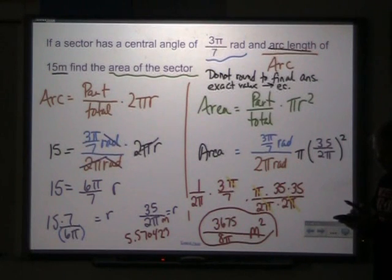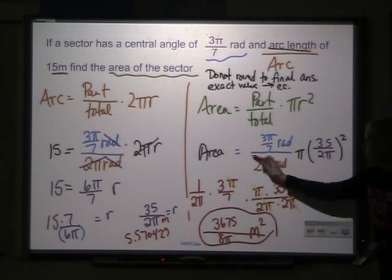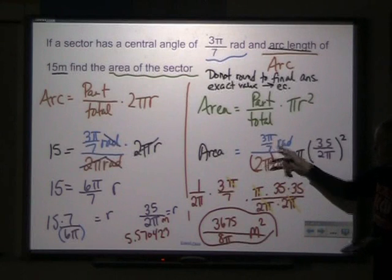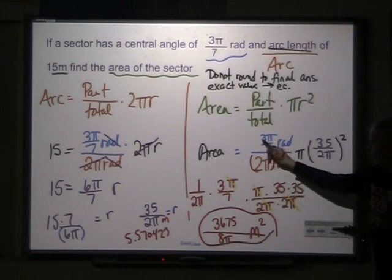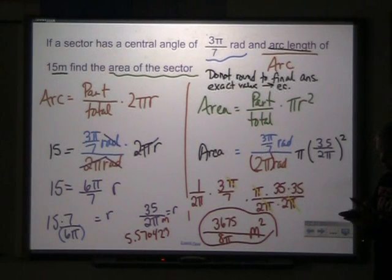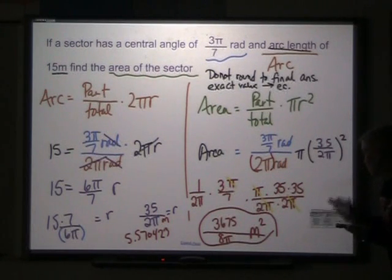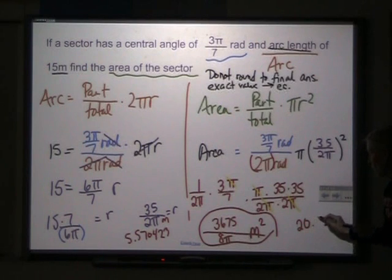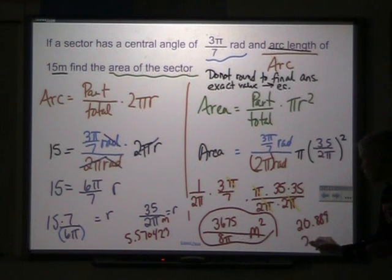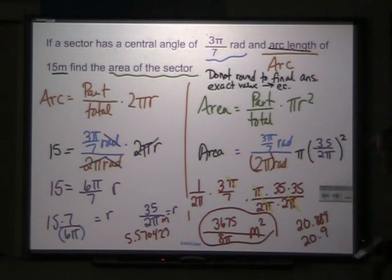And then I'm going to multiply it by 3π and divide it by 7. And you should get 20.889. So the only correct answer I will accept in rounding is 20.9 or 20.89, whichever way you want to round it to.